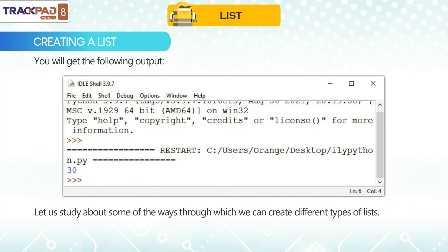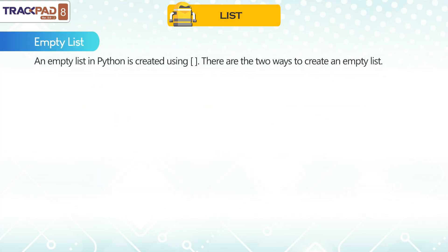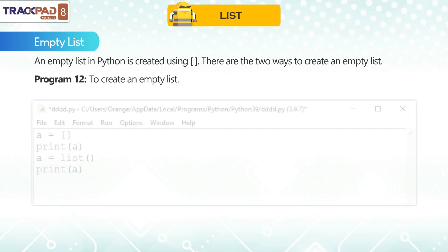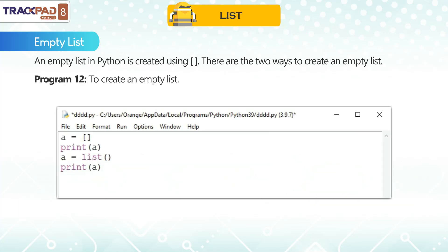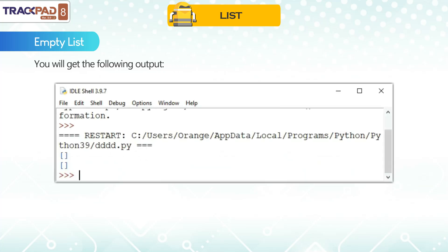Let us study about some of the ways through which we can create different types of lists. Empty List: An empty list in Python is created using square brackets. There are two ways to create an empty list. Program 12: To create an empty list, you will get the following output.